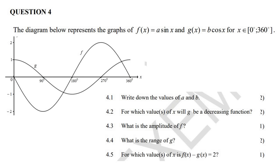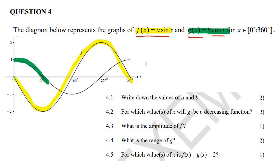The diagram below represents the graph of f of x, which is a sin graph, and g of x, which is a cos graph. So let's just highlight that. So f is the sin graph over here, and then g is the cos graph.